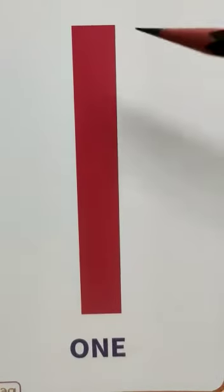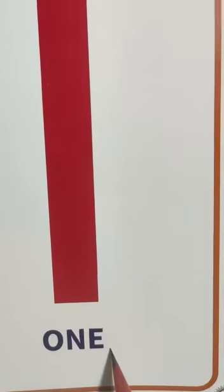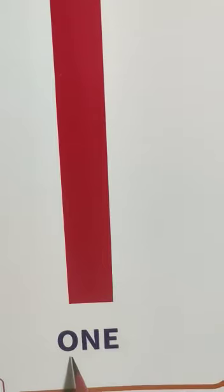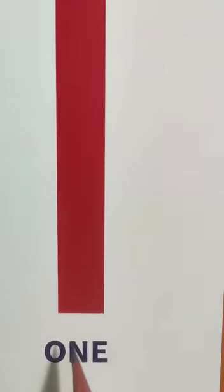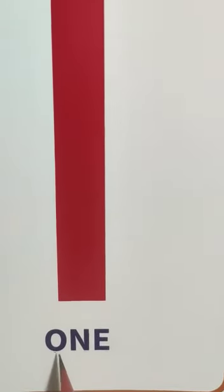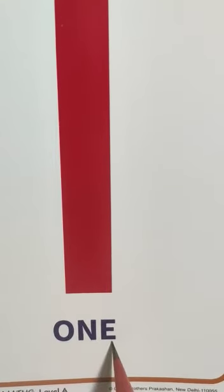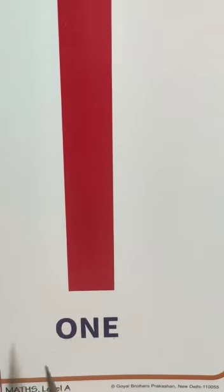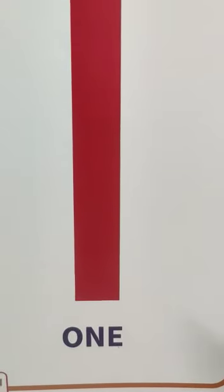Here you can see number one. This is number one, and here in word — word means alphabetically — how can you write it. So this is number one and it is written in word: O-N-E, one. O-N-E, one. O-N-E — this is one. So now I will tell you how can you write number one in word.